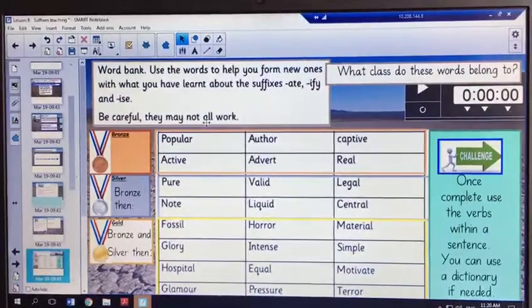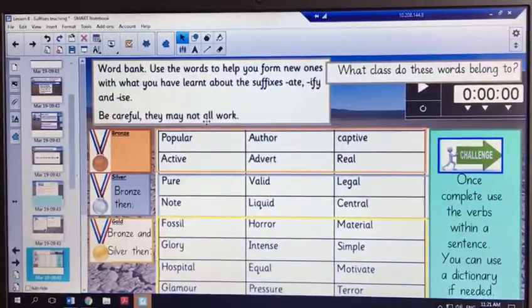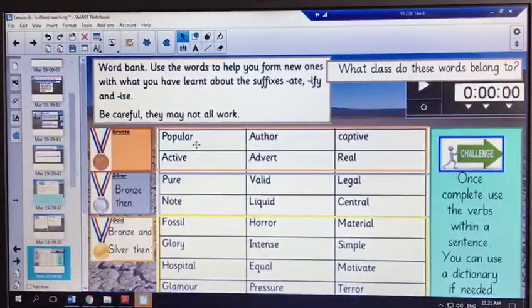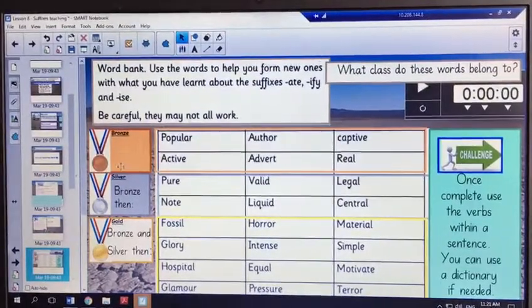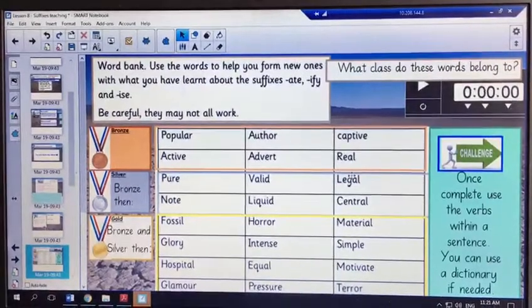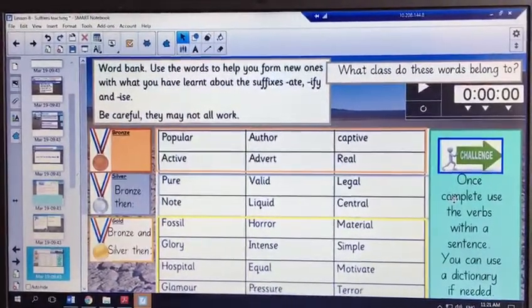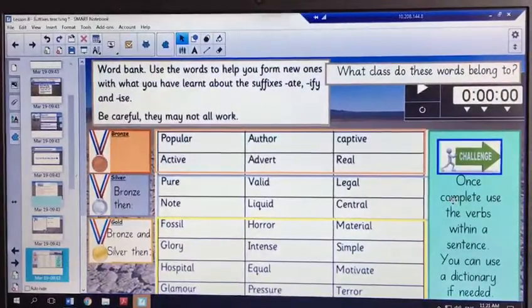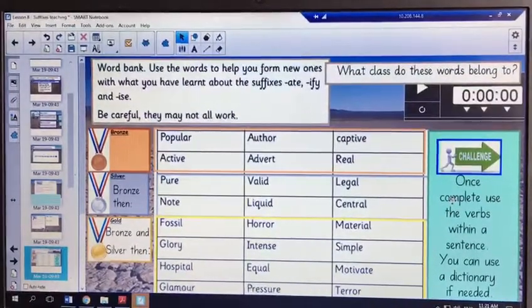But don't worry if you don't understand what it means, because we will be exploring the meaning of these words later on in the lesson. Also, if you feel like you need more practice, you can always select another task of bronze, silver or gold just for some more practice. And then once you've finished, you can complete the challenge if you are feeling confident. Okay, so when you are ready, pause the video and then when you are ready, press play for the answers.